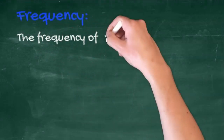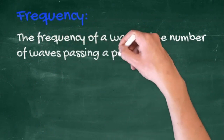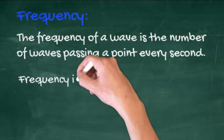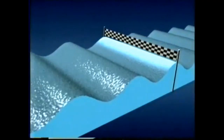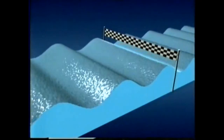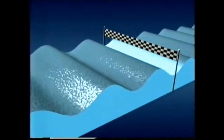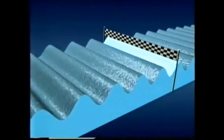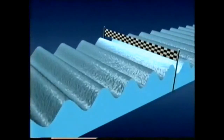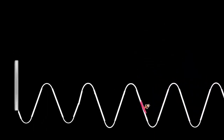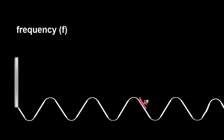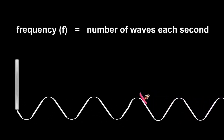The frequency of a wave is a measure of the number of vibrations, or the number of waves passing a point every second. Frequency is measured in hertz or seconds to the minus one. The frequency is the number of waves going through the finishing line every second. When the frequency is increased, more waves pass through per second — this is a higher frequency. Frequency can be related to the colour of light or the pitch of sound, and the symbol we use is the letter F.